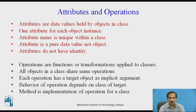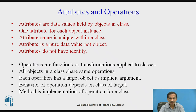Attributes are data values held by objects in the class. One attribute per object instance is considered. Attribute name is unique within a class. An attribute is a pure data value and not an object, and attributes do not have identity. Operations are functions or transformations performed on a particular class. They may be applied specifically to the class, and objects of the class share the same operations. Each operation has a target object as an implicit argument, and the behavior of operations depends on the class of the target and the method of implementation for that particular class.